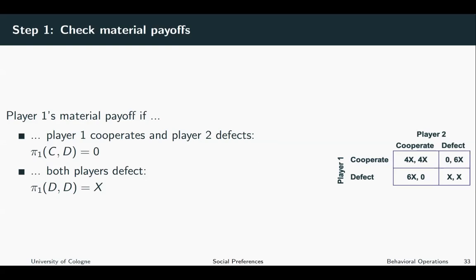We are checking the material payoffs of player one, given that player two is playing the equilibrium — or supposed-to-be equilibrium — strategy of defecting. In this case, if player one cooperates and player two defects, then the utility of player one is just zero. So player two is defecting and I'm cooperating, I get zero. If both players defect, then player one gets x.